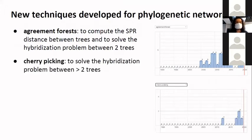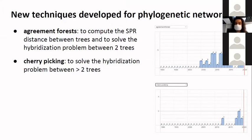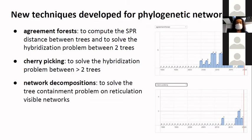More recently, cherry-picking methods appeared. That's a nice algorithm to solve the same hybridization problem but when you have more than two trees. You can find those graphs on the slides and click on them to access the publication on the phylnet website. We also found that network decompositions were quite useful to solve several problems, especially tree containment problems, and that's what helped our co-authors to get their 2016 result on tree containment.